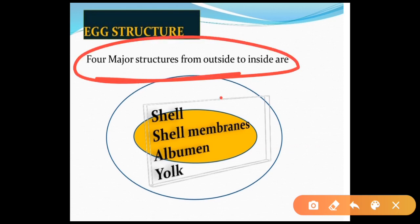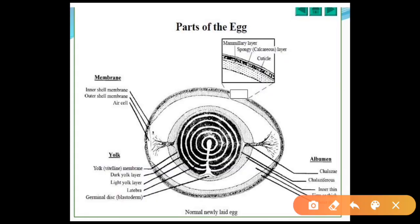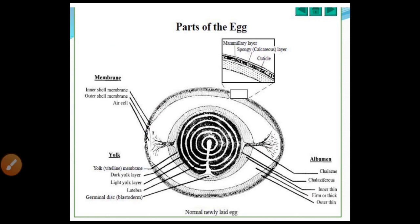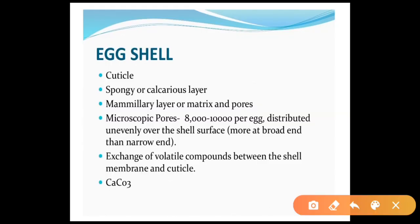The four major structures of an egg are: shell, shell membrane, albumin, and yolk. From outside inward: the shell has three layers — outer shell membrane, inner shell membrane, and an air cell. The yolk has a vitelline membrane, dark yolk layer, light yolk layer, latebra, and germinal disc (blastoderm). The shell membrane has three layers: mammillary layer, spongy calcareous layer, and cuticle. Albumin contains chalaza, chalaziferous layer, inner thin, outer thick (firm), and outer thin layers.